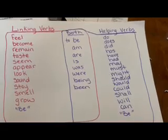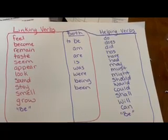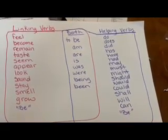And then the forms of to be are in both. To be: am, are, is, was, were, being, been.